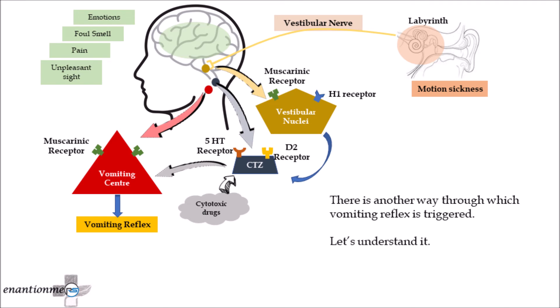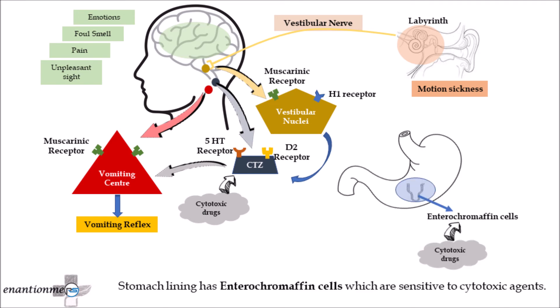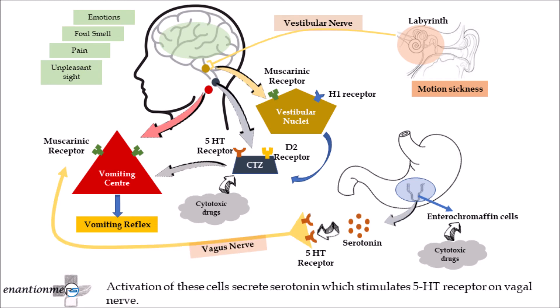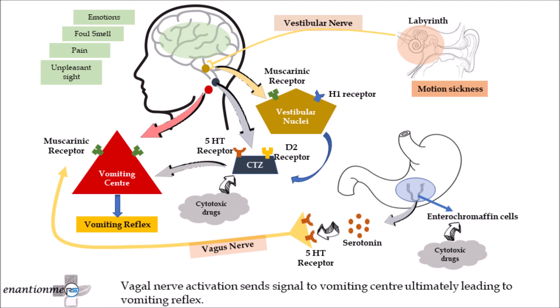There is another way through which the vomiting reflex is triggered. The stomach lining has enterochromaffin cells which are sensitive to cytotoxic agents or drugs. Activation of these cells secretes serotonin, which stimulates 5-HT3 receptors on the vagus nerve. This activation of the vagus nerve sends a signal to the vomiting center, ultimately leading to the vomiting reflex.